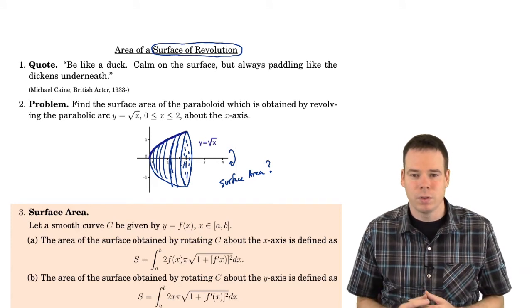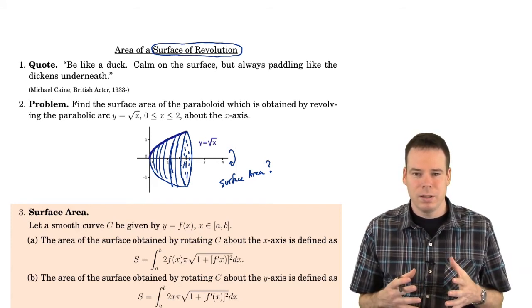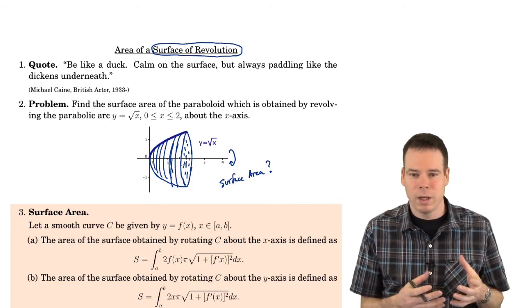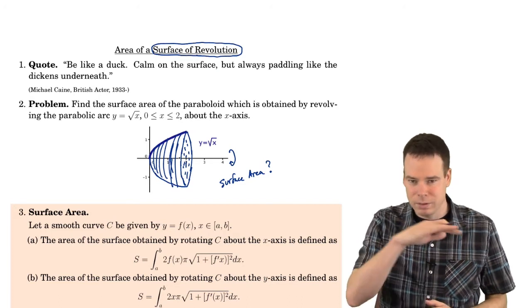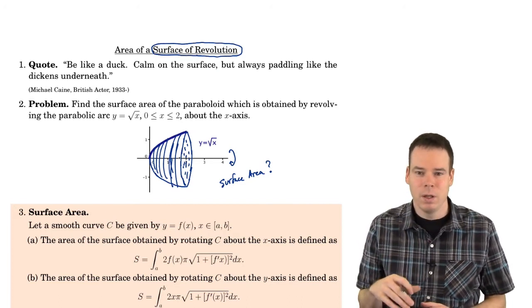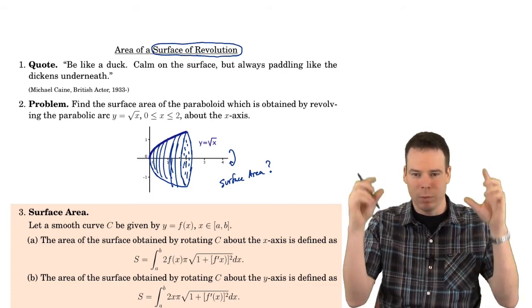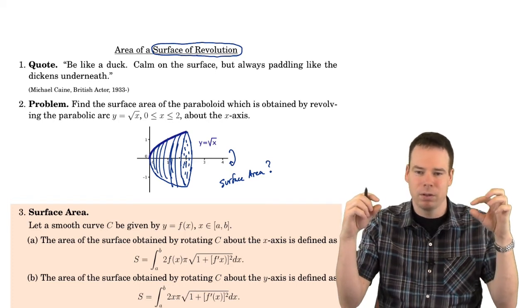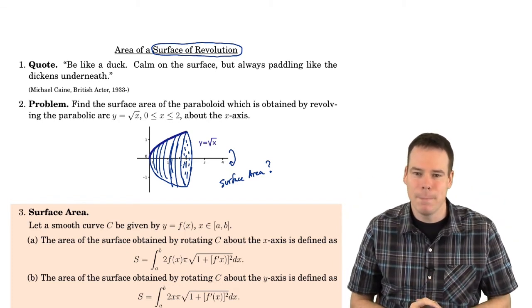Similarly, when we did volumes of solids, we started with the basic idea that we knew some basic volumes — volumes of cylinders, really thin cylinders that we got as slices of our volume. We found the volumes of these small thin cylinders and then summed them all up and looked at the integral, integrating over cross-sectional areas. So we started with volumes of cylinders as our basic building blocks.